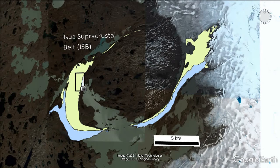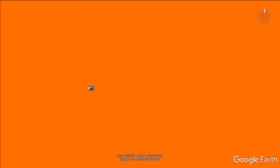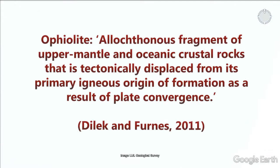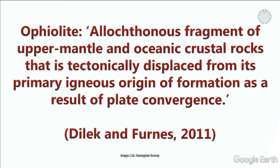A lot of authors have debated whether Ischewod is an ophiolite, so it's worth starting with our definition. We're using the one from Dillac and Ferns 2011: an ophiolite is an allochthonous fragment of upper mantle and oceanic crustal rocks that is tectonically displaced from its primary igneous origin as a result of plate convergence.